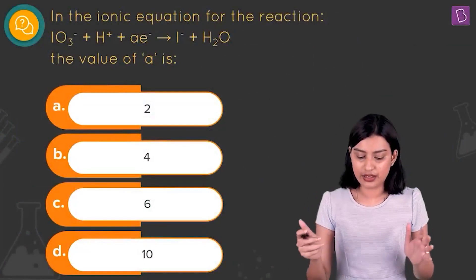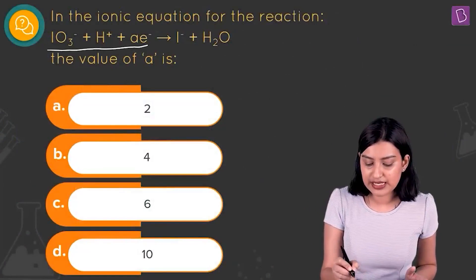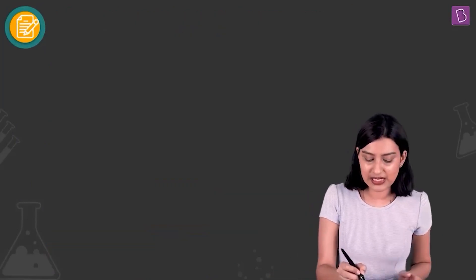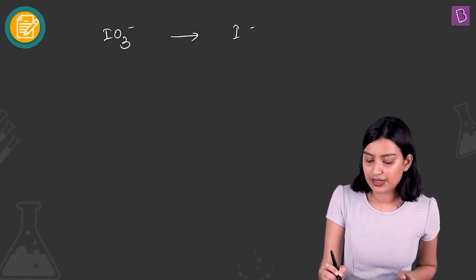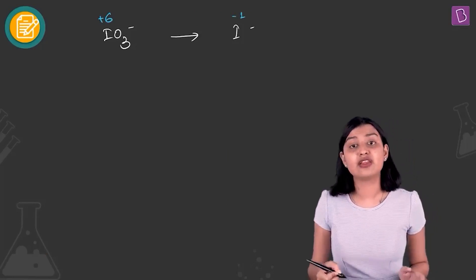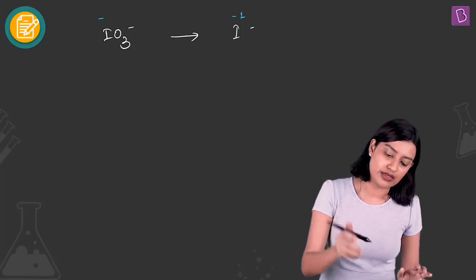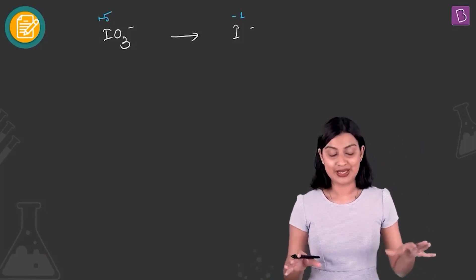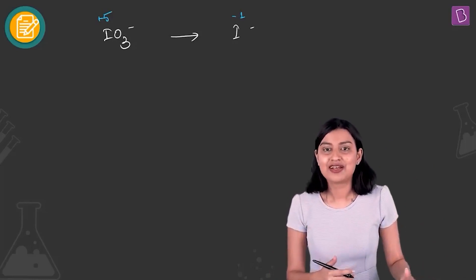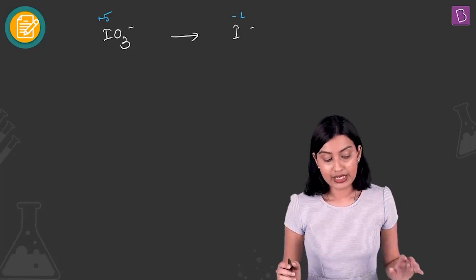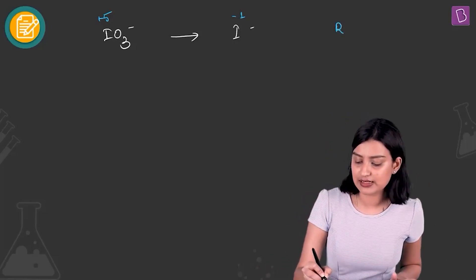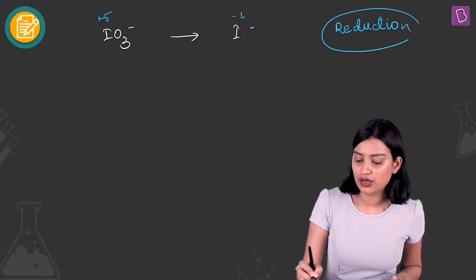In the ionic equation: IO3⁻ + H⁺ + A electrons → I⁻ + H₂O, find the value of A. In iodate, the oxidation state of iodine is +5; after the reaction it becomes -1 in iodide. This is a reduction half-reaction. The first step is to balance the element undergoing redox — iodine is already balanced, one atom on each side.